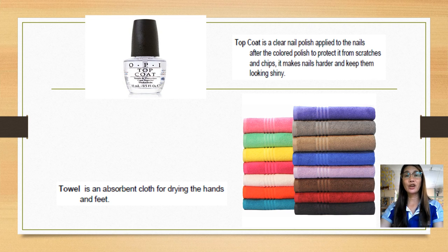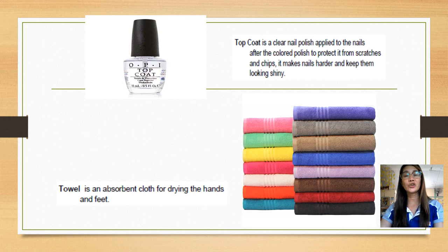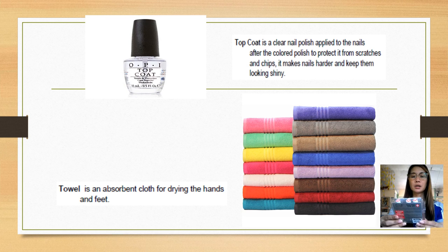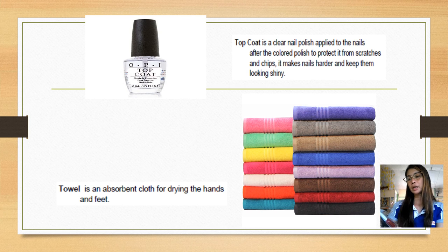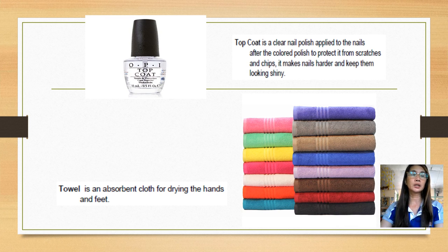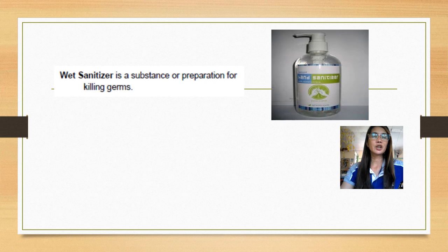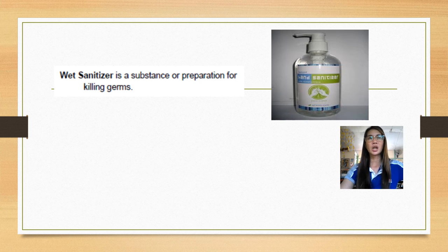Top coat is a clear nail polish applied after the colored polish to protect nails from scratches, make them harder, and keep them looking shiny. Towel is an absorbent cloth for drying the hands and feet. Wet sanitizer is a substance or preparation for killing germs, used to clean the area, tools, and materials.